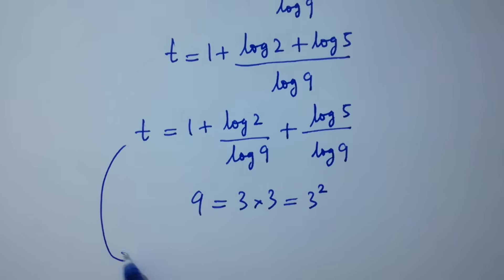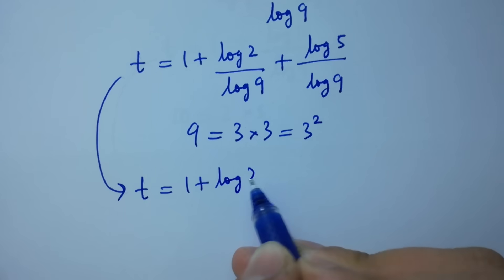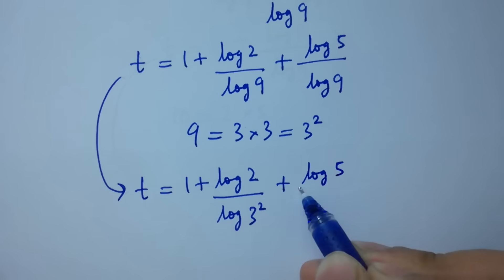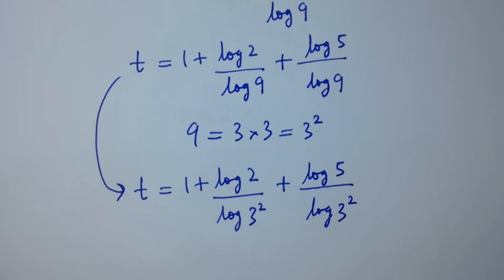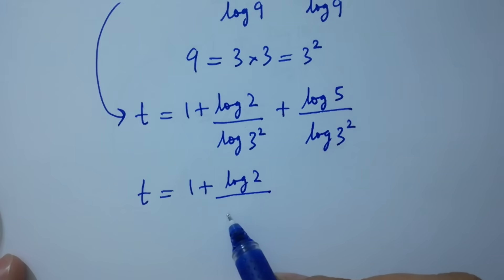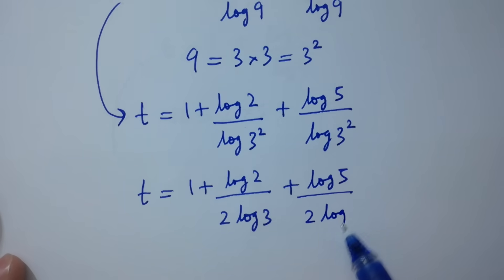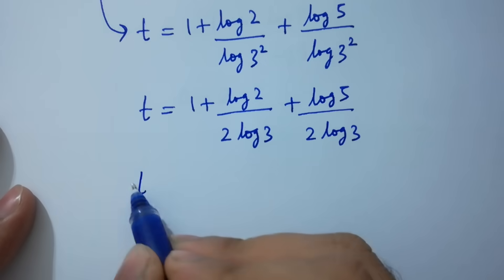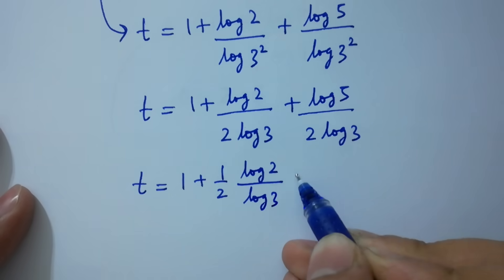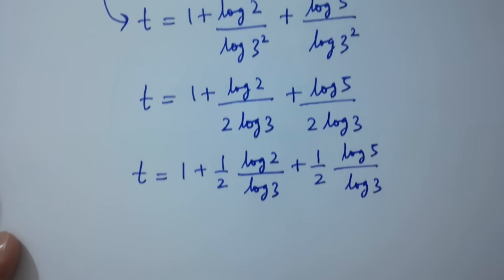We have t equal to 1 plus log 2 over log 3 squared plus log 5 over log 3 squared. This gives t equals 1 plus log 2 over 2 log 3 plus log 5 over 2 log 3, which equals 1 plus half log 2 over log 3 plus half log 5 over log 3.